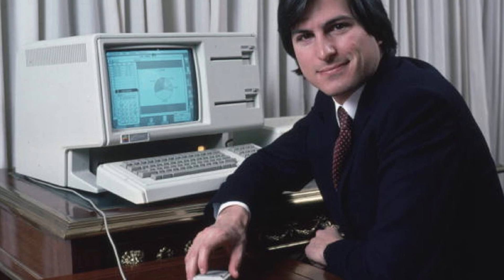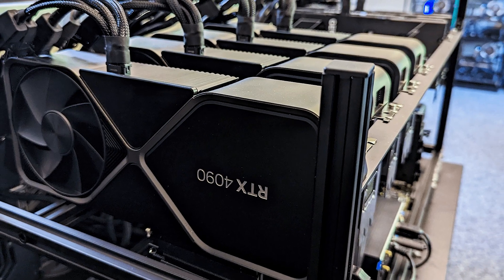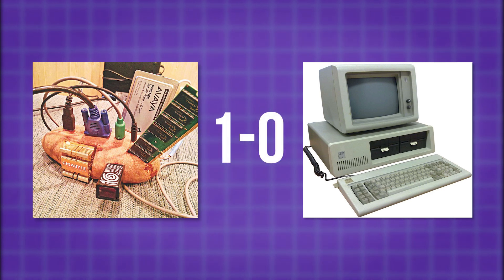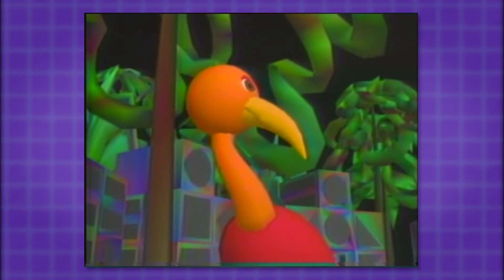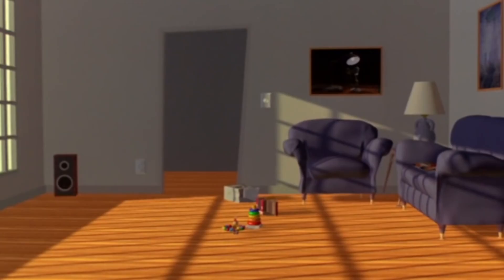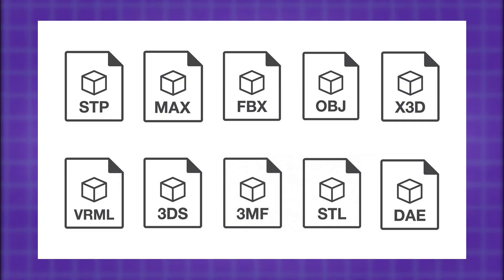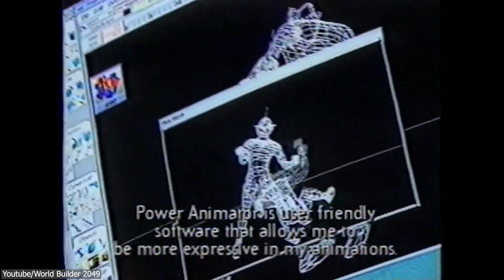You can imagine what computers were like in the 80s and early 90s. They had significantly less processing power and memory compared to what we have today, which means basically your potato computer has way more power than the best thing we had 30 to 40 years ago. This limited the complexity and detail that could be achieved in 3D graphics. Rendering realistic scenes with advanced lighting and shading was often slow and required considerable optimization. Additionally, in the early days, there were no standardized file formats that could make data exchange easy, which made it extremely difficult for different software to communicate and share data.